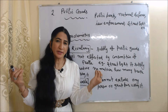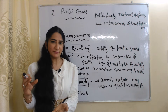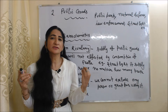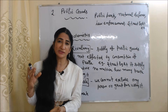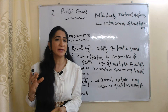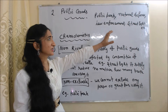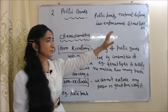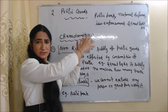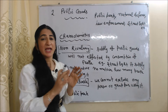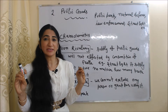Now we are going to talk about the next cause of market failure — public goods. As we know, public goods are provided by the government. For example, public parks, national defense, law enforcement, and street lights. Public goods basically have two characteristics: non-rivalry and non-excludable.